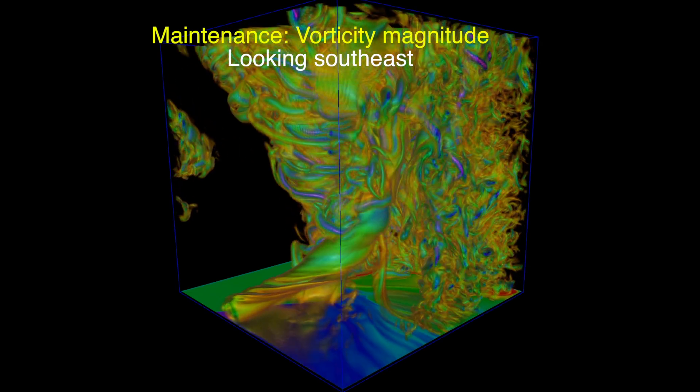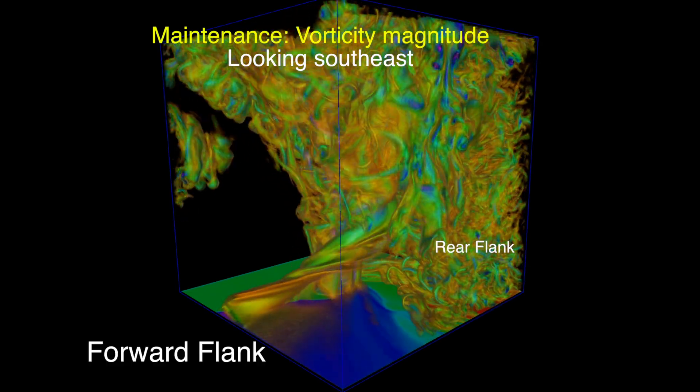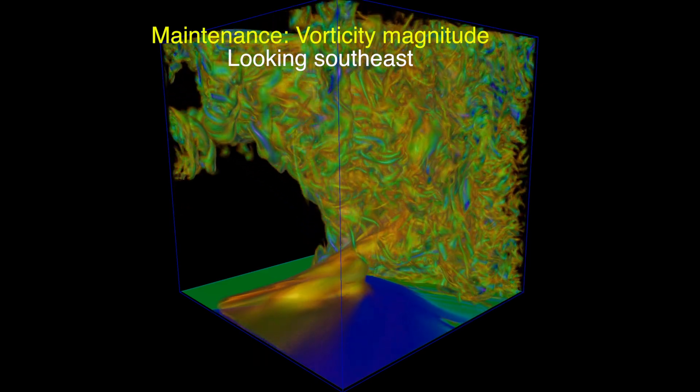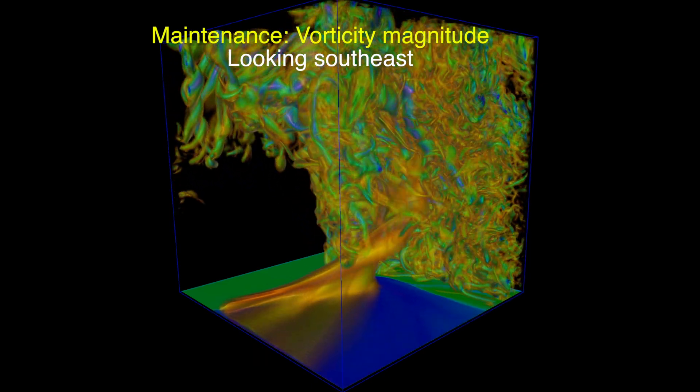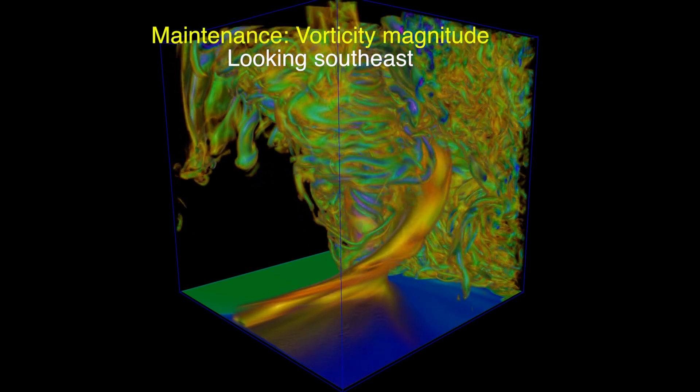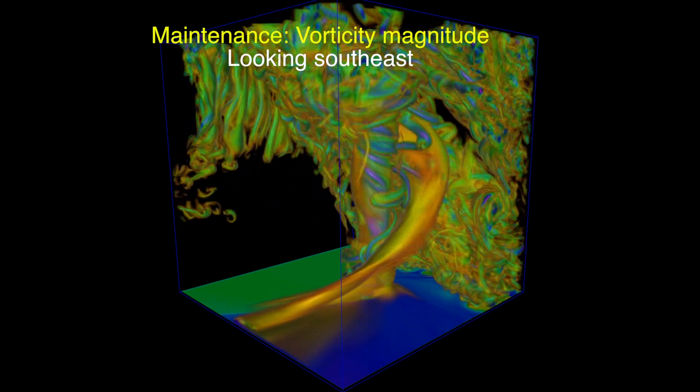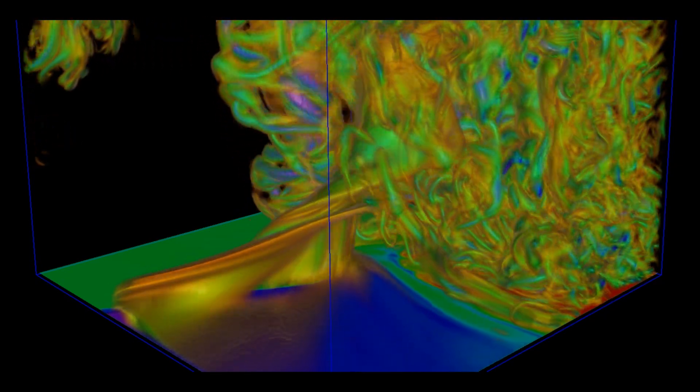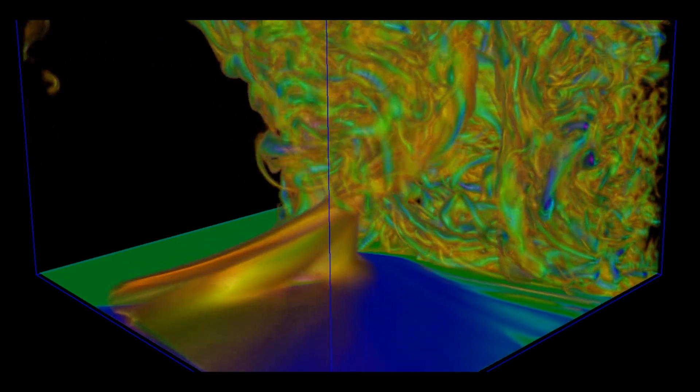This sequence shows the vorticity field during maintenance when the tornado is consistently producing EF5 strength winds. A key feature revealed by these visualizations is the train of vorticity that forms along the storm's forward flank boundary and is tilted into the vertical where it becomes part of the storm's rotating updraft. Here we show the same sequence, zooming in on this feature, which is shown to be distinct from the tornado itself.